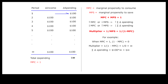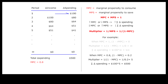For example, when MPC is equal to 1, the multiplier is equal to infinity, and total additional spending is infinite times the initial stimulus injection. And when MPC is equal to 0.8, the multiplier is equal to 5, and total additional spending is therefore 5 times the initial stimulus injection.